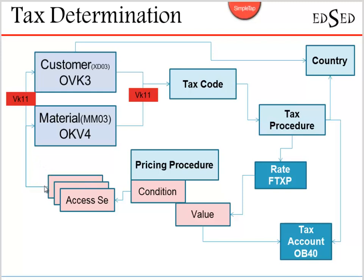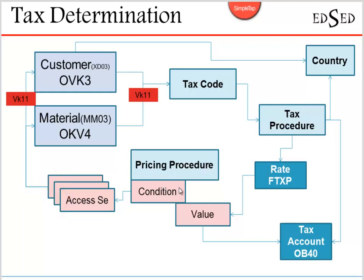There is a sequence of activities that happen for the determination of a specific condition. The determination is done using the combination of customer and material, and the value calculated in the tax procedure with the tax code is applied within the pricing procedure.